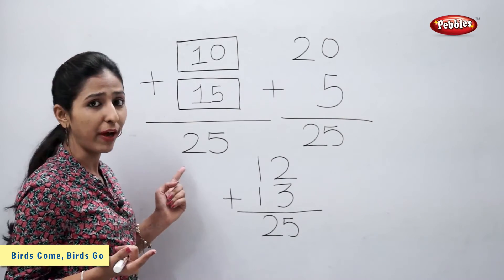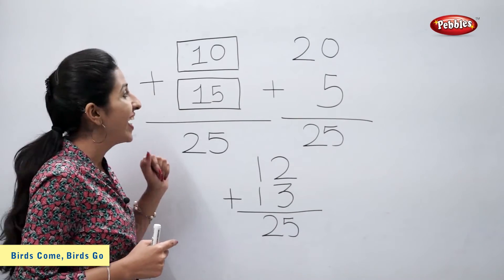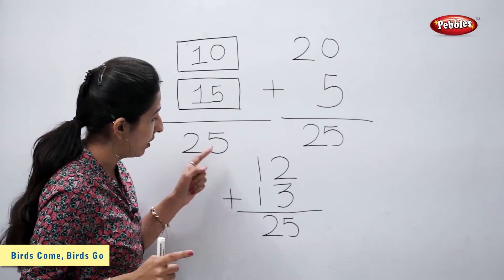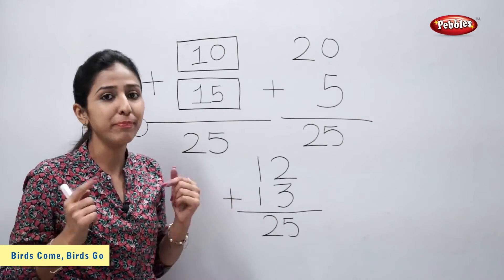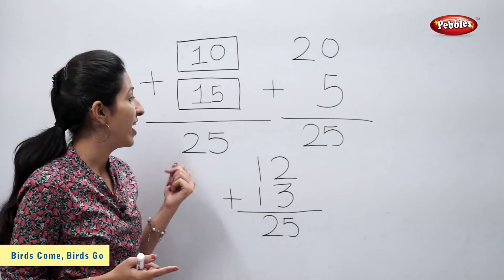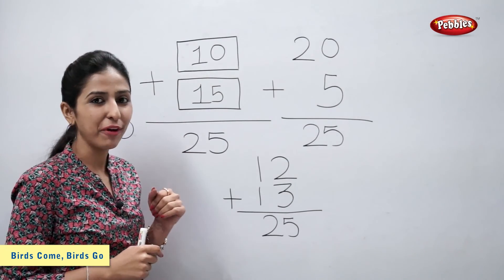So, for getting answer 25, we have used 10 plus 15, 20 plus 5, and 12 plus 13. So, for getting any particular number, we can use various numbers. Answer of all these combinations is 25.